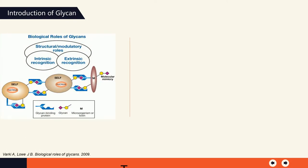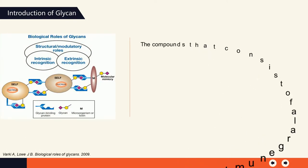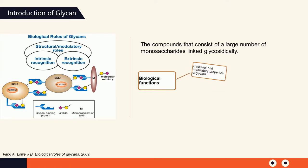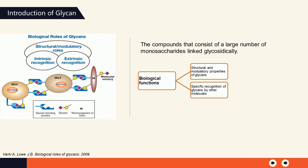Glycans are defined as the compounds that consist of a large number of monosaccharides linked glycosidically. Glycans have diverse biological functions and can be classified into two broad categories: one is the structural and modulatory properties of glycans, and the other is the specific recognition of glycans by other molecules, most commonly glycan-binding proteins.